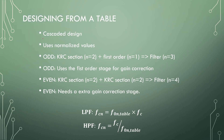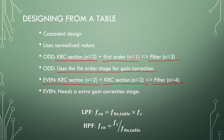Designing from a table is typically a cascaded design from normalized values. For a filter of odd order, we can use KRC sections making up the even part, and then add an odd part by adding a first order section — so a KRC section plus a first order filter gives us a third order filter. For even order KRC filters, we can just cascade KRC sections; two of them give us a fourth order filter.